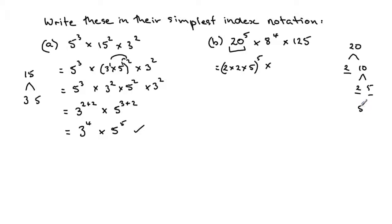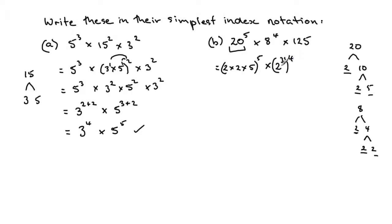For 8: 8 is 2 times 4, and 4 is 2 times 2, giving us 2 times 2 times 2, so 8 is 2 cubed. That's 2 cubed all to the power of 4. We could also write the 20 part as 2 squared times 5, since there are two 2s — adding the indices gives 1 plus 1 equals 2.